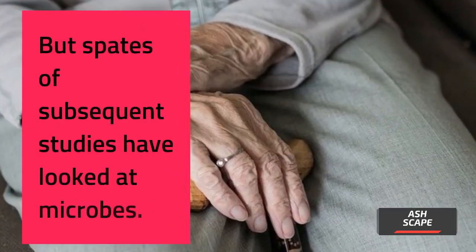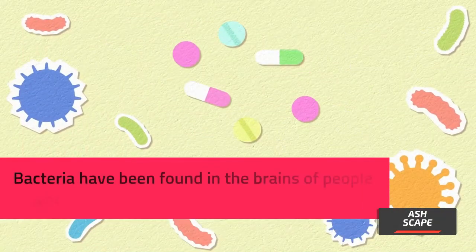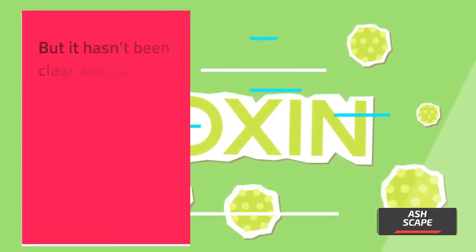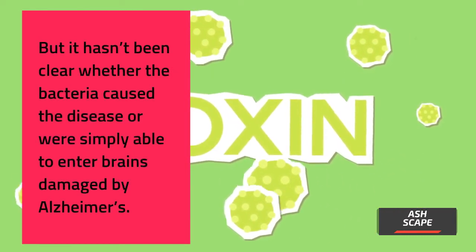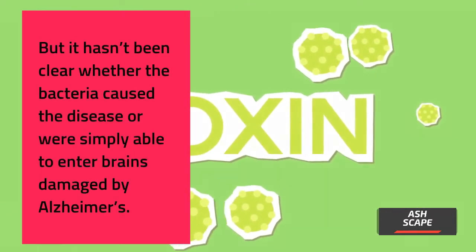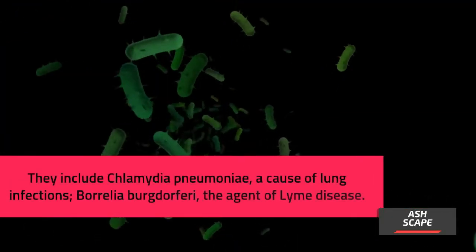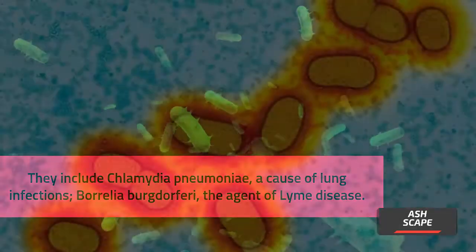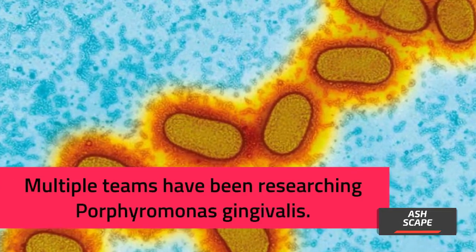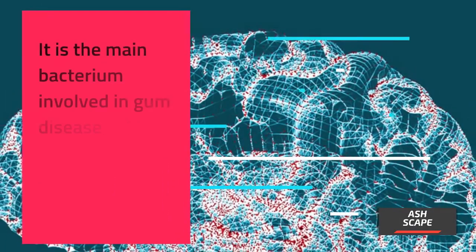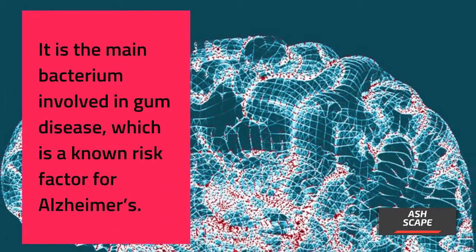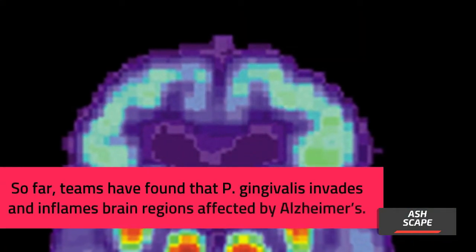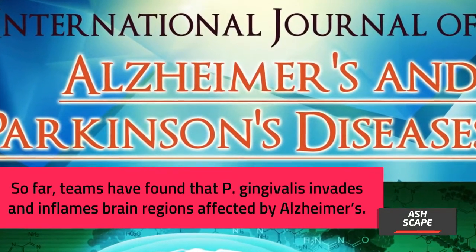But subsequent studies have looked at microbes. Bacteria have been found in the brains of people who had Alzheimer's when they were alive, though it hasn't been clear whether the bacteria caused the disease or were simply able to enter brains already damaged by Alzheimer's. These include Chlamydia pneumoniae, a cause of lung infections, and Borrelia burgdorferi, the agent of Lyme disease. Multiple teams have been researching Porphyromonas gingivalis — the main bacterium involved in gum disease, which is a known risk factor for Alzheimer's. So far, teams have found that P. gingivalis invades and inflames brain regions affected by Alzheimer's.